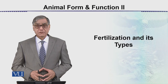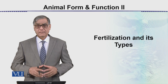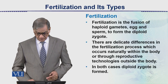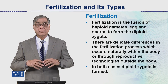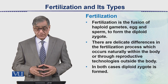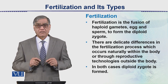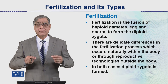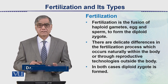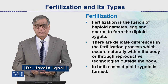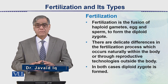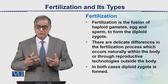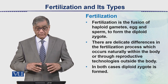Today's topic is fertilization and its types. Fertilization is a biological process in which there is a fusion of gametes — the fusion of sperms and eggs. If there are haploid gametes, then after fertilization a diploid zygote is formed, which then develops into a complete individual.